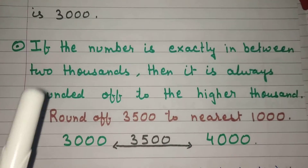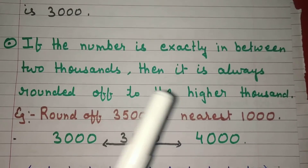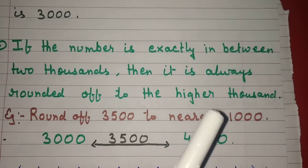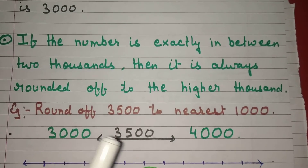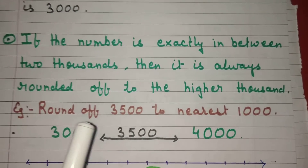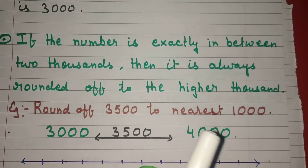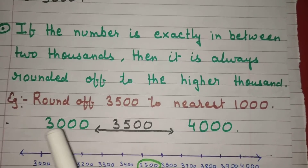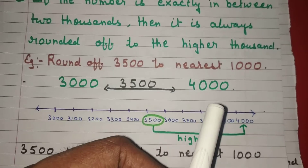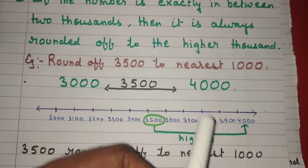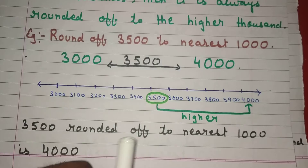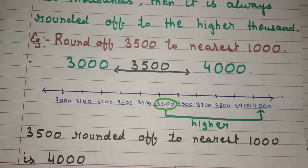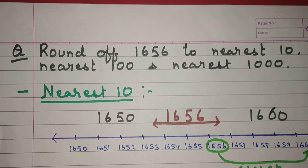Now, what if the number is exactly in between two thousands? If the number is exactly in between two thousands, it is always rounded off to the higher thousand. Example: Round off 3500 to the nearest thousand. 3500 is between three thousand and four thousand. The higher thousand is four thousand, so 3500 rounded off to the nearest thousand is four thousand.